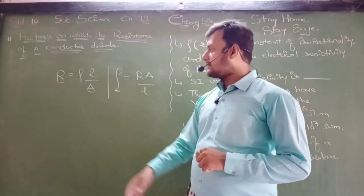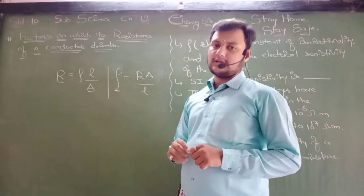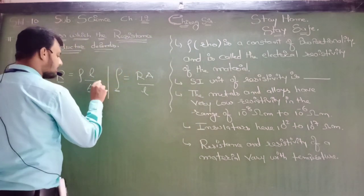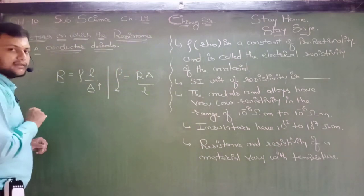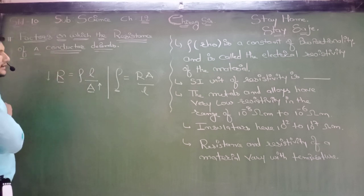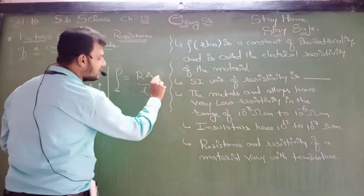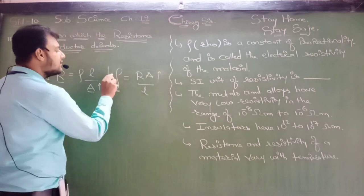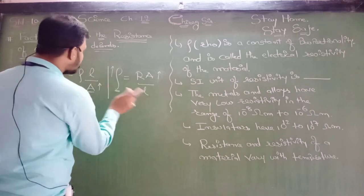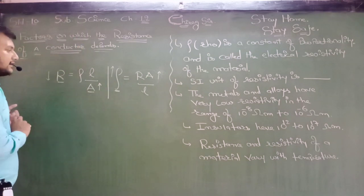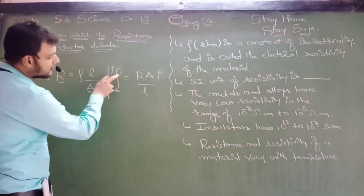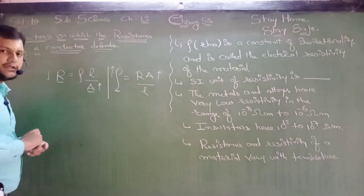Please pay attention. Resistance is inversely proportional to the area — it means if the value of area is increased, then the value of resistance will be decreased. But here, if the value of area increases, value of resistivity also increases. R is directly proportional to L, and rho is inversely proportional to L.